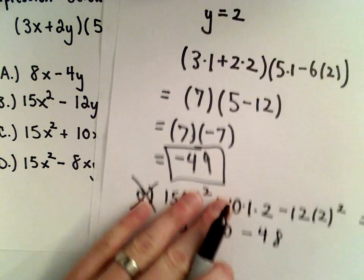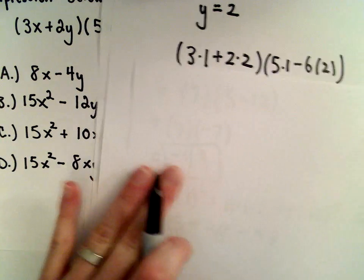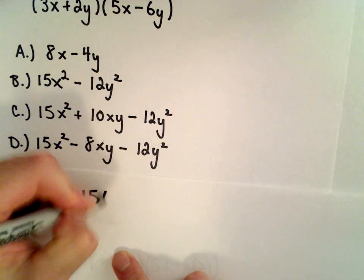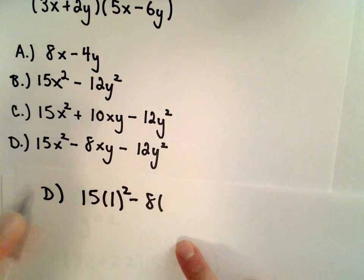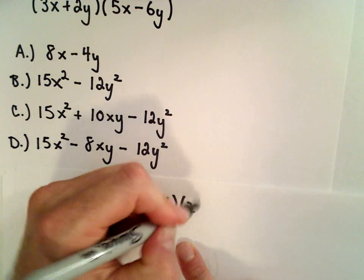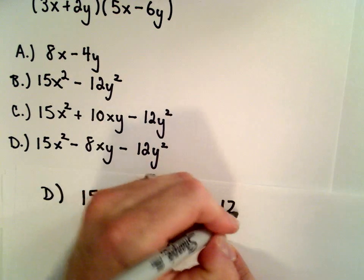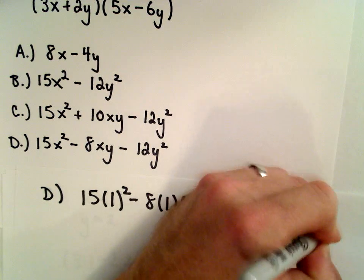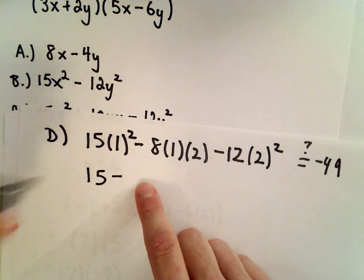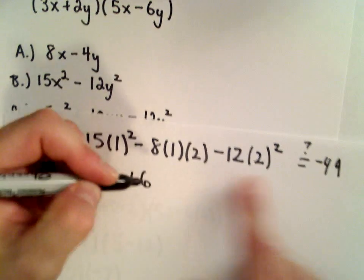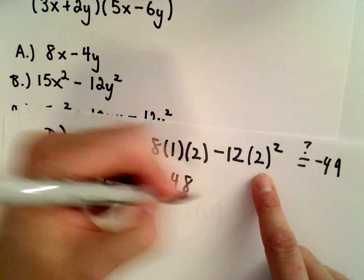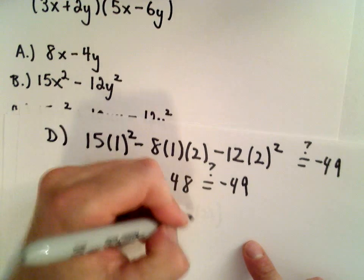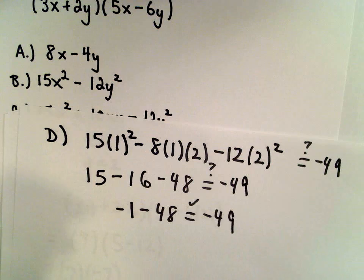Let's try part D. We would have 15 multiplied by 1 squared minus 8 multiplied by 1 multiplied by 2, minus 12 times 2 squared. Does that equal negative 49? Here we're going to have 15 minus 16 minus 48. 15 minus 16 is negative 1 minus 48, and that does equal negative 49.